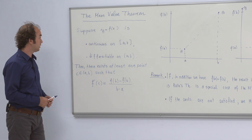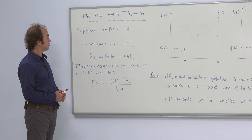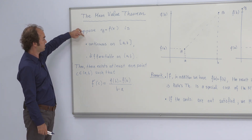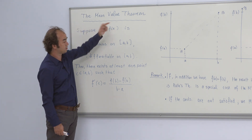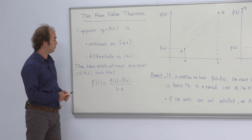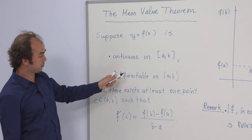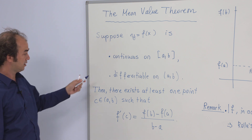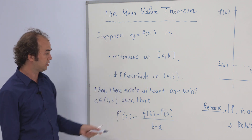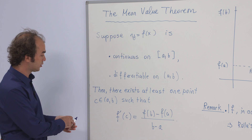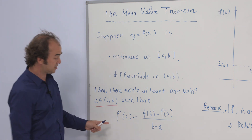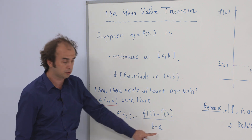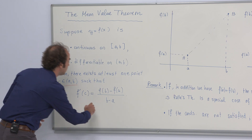Let's start by giving the statement of the theorem. Suppose y equals f of x is a function such that it is continuous on the closed interval [a, b] and differentiable on the open interval (a, b). Then the theorem says that there exists at least one point c in the open interval (a, b) such that the derivative of f at that point c is equal to the expression on the right hand side.